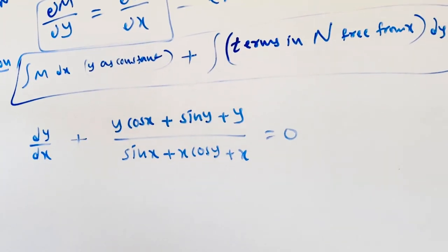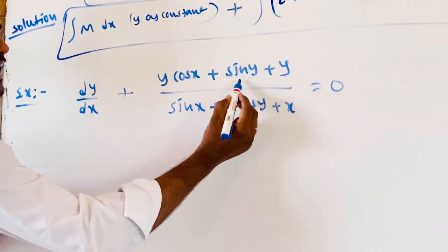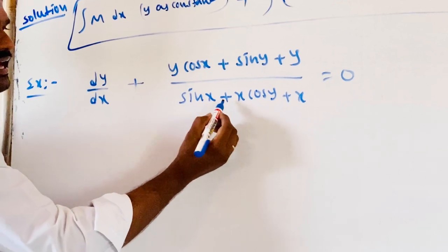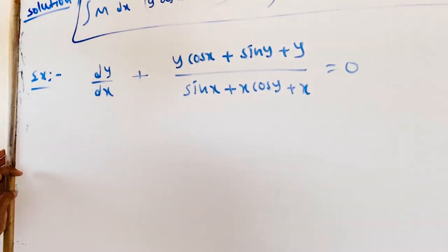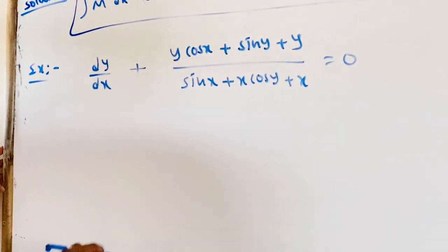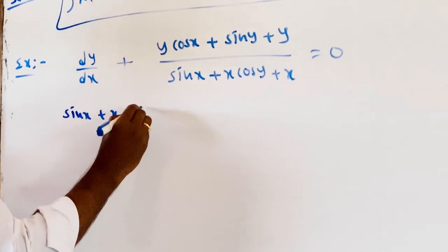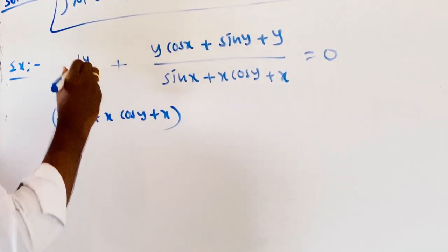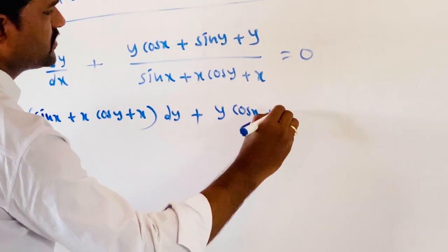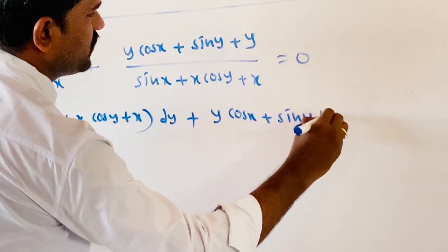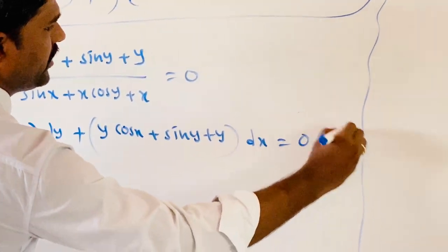Let us look at an example: dy/dx plus y cos x plus sin y plus y, times sin x plus x cos y plus x, equals 0. By cross multiplication, this becomes: (sin x plus x cos y plus x) dy plus (y cos x plus sin y plus y) dx equals 0. This is Equation 1.